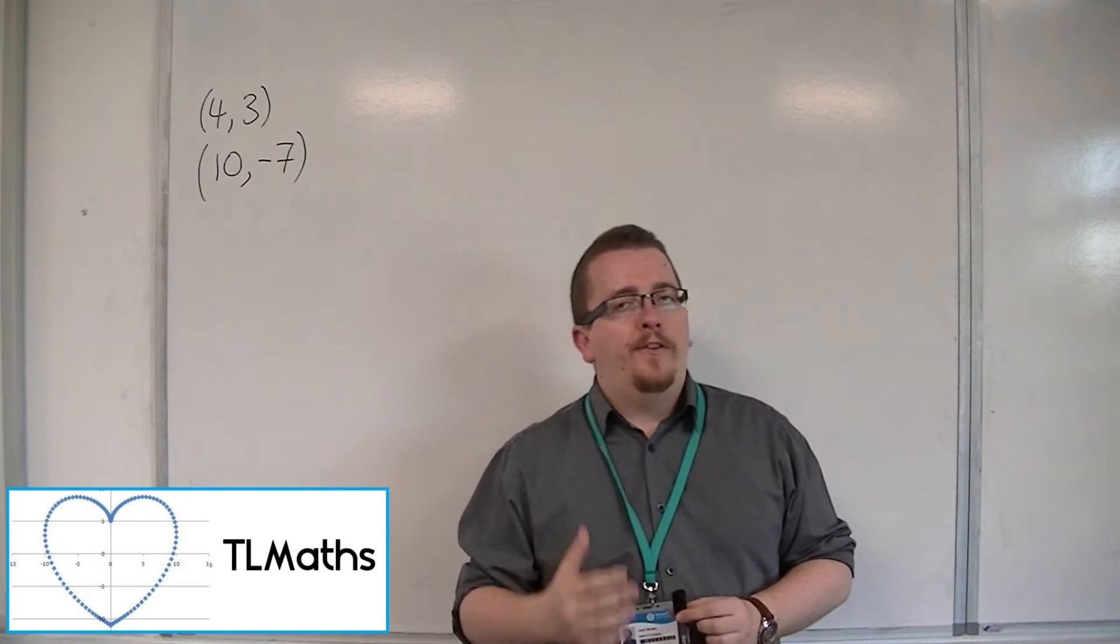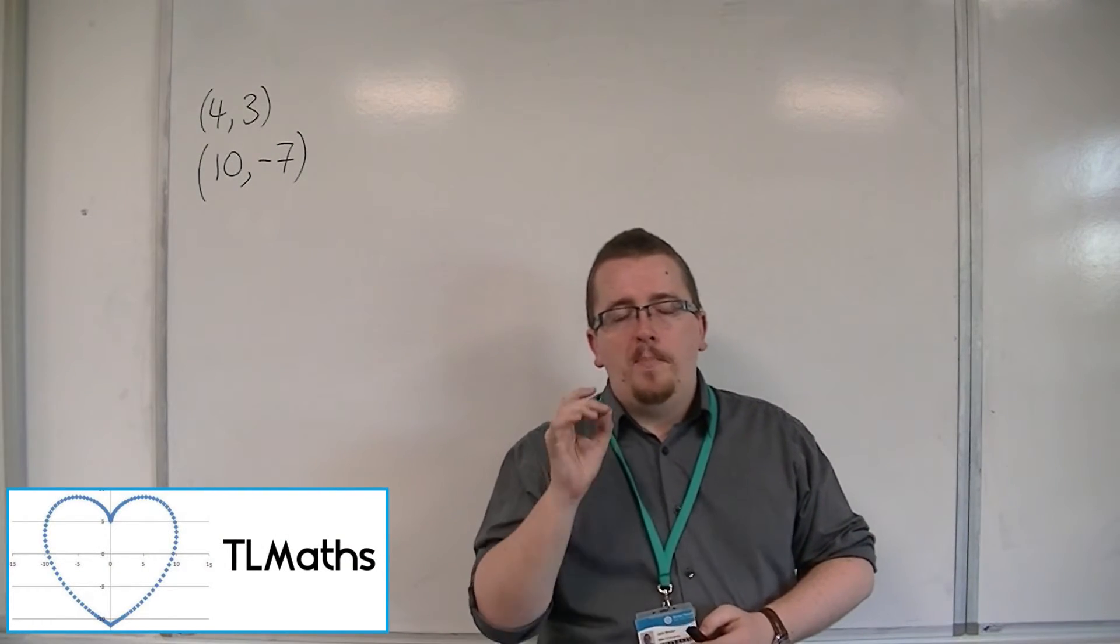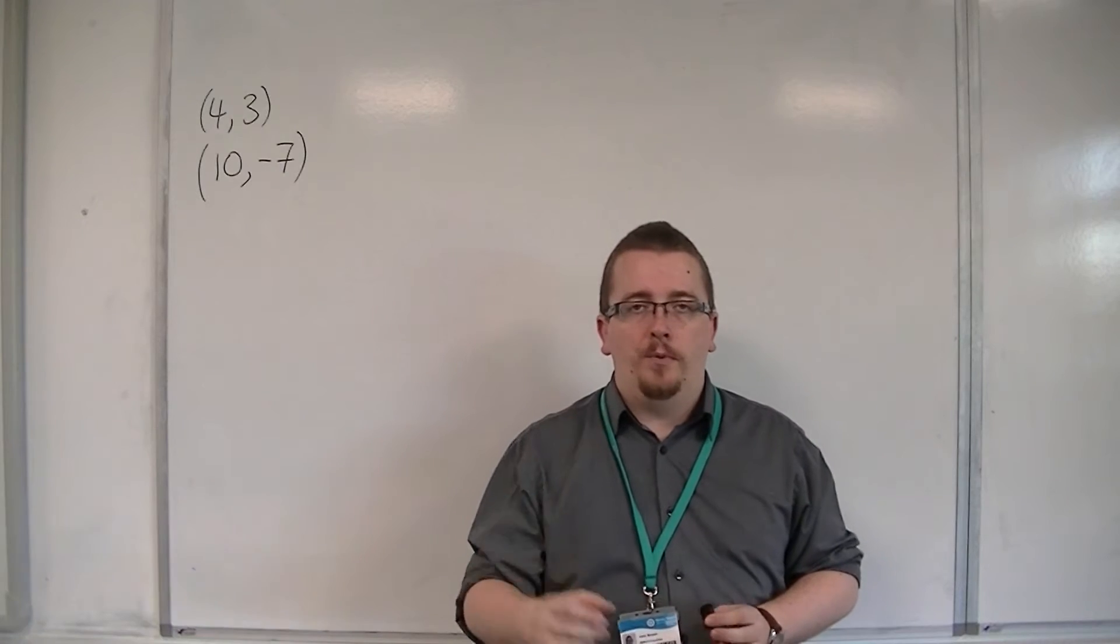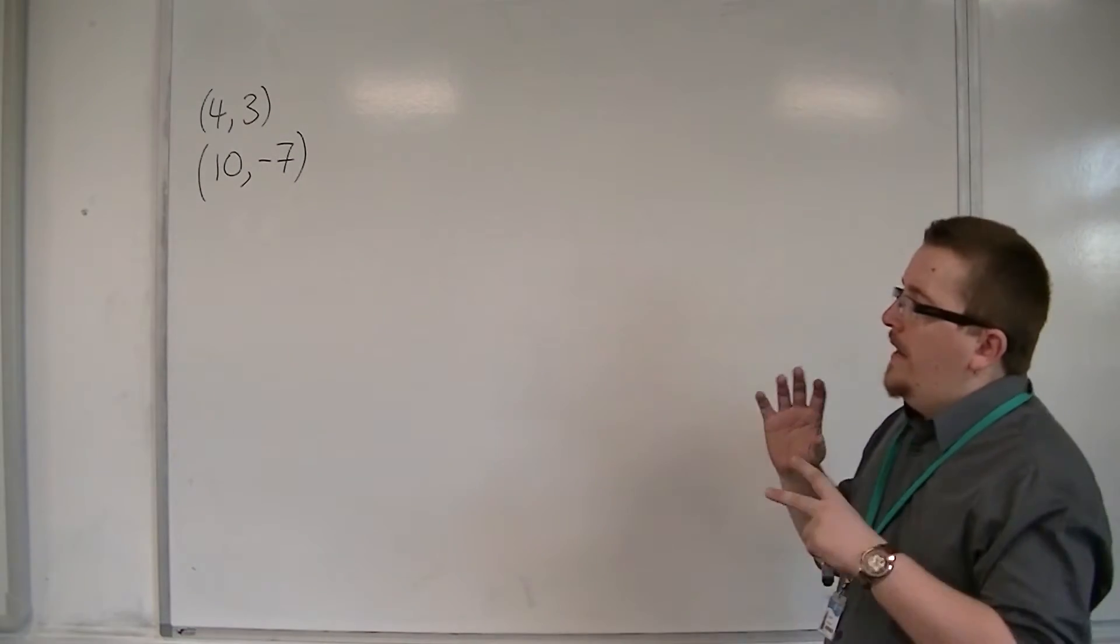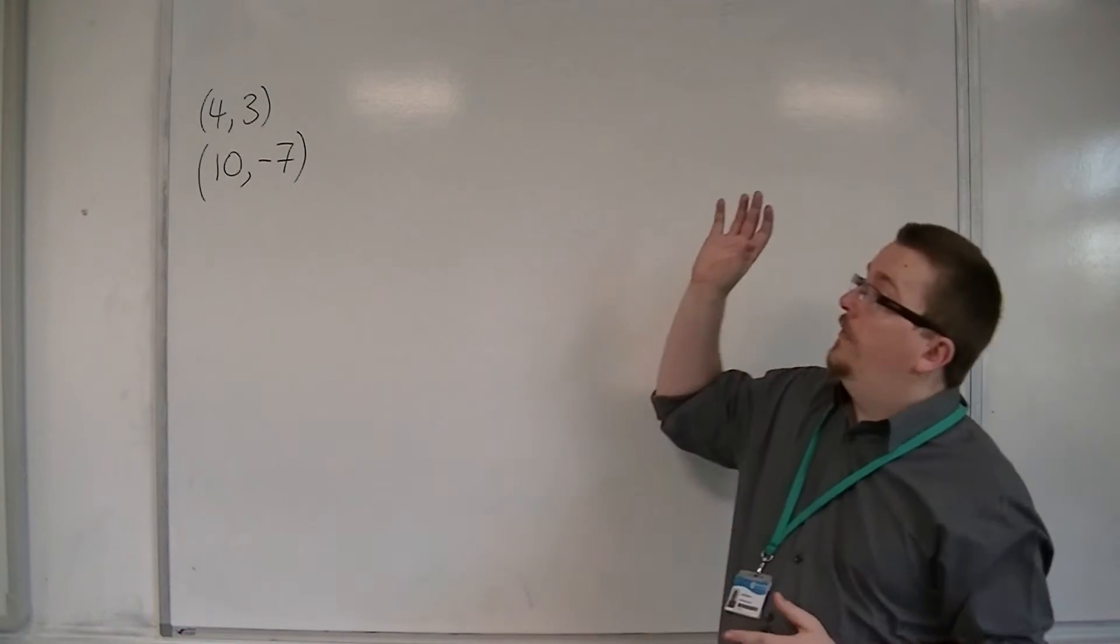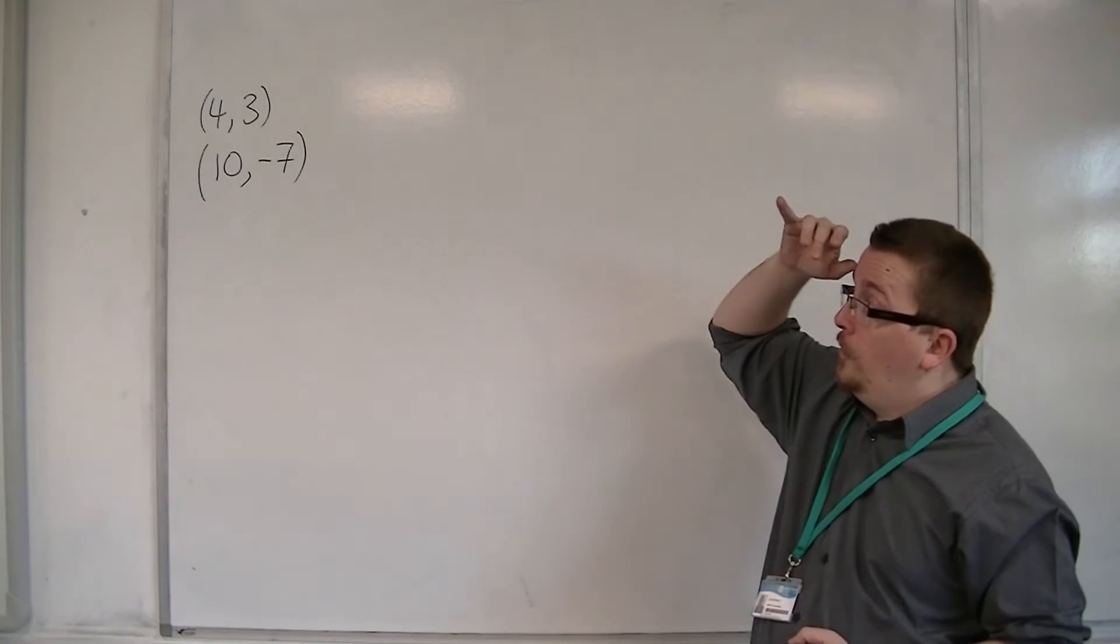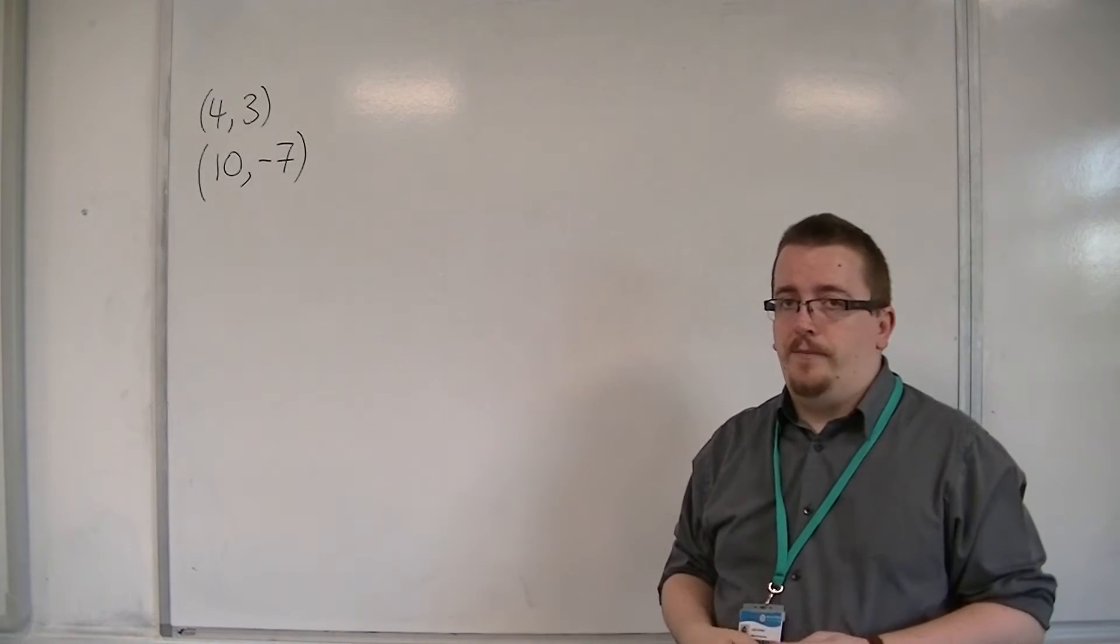In this video, we want to find the equation of the perpendicular bisector of two points. Let's begin with the two points. These are the ones I've chosen: 4, 3, and 10, minus 7.